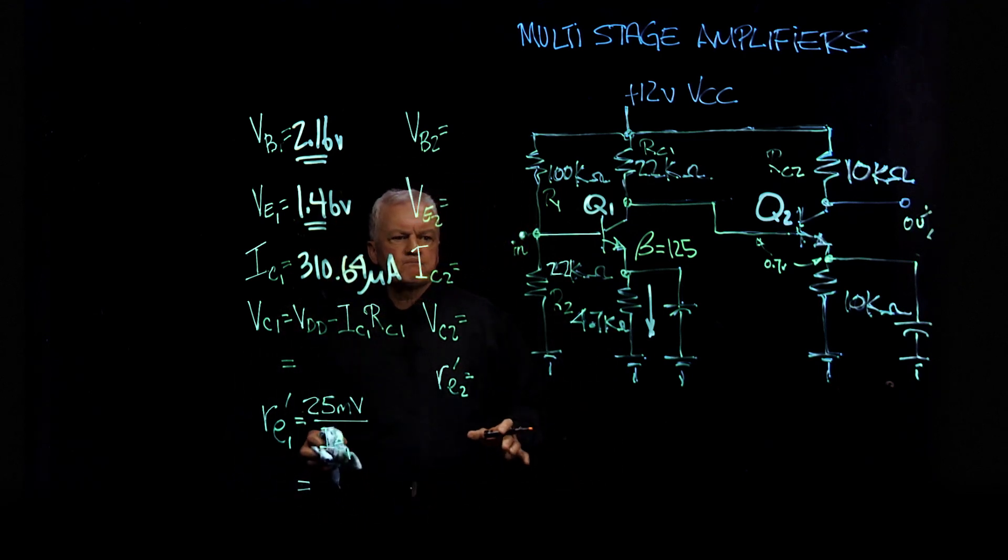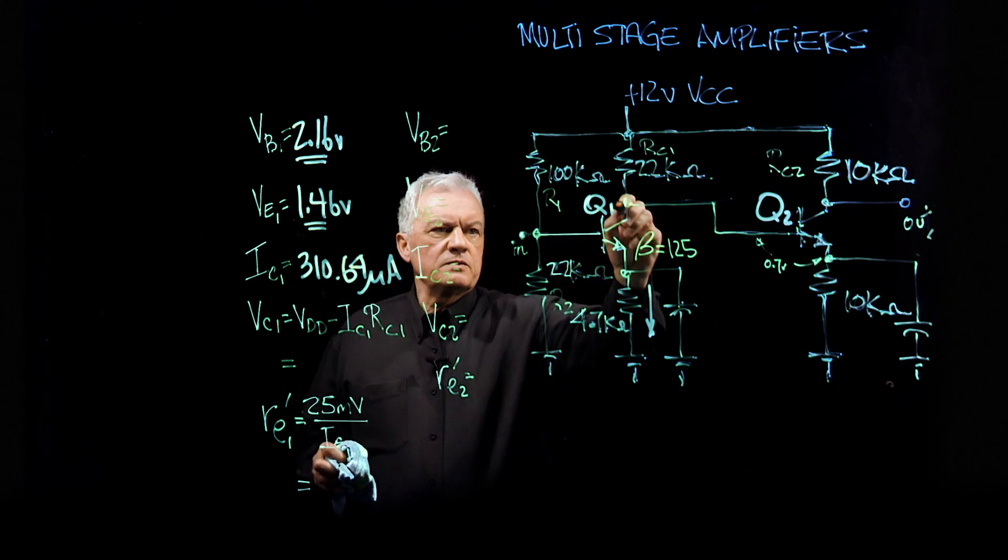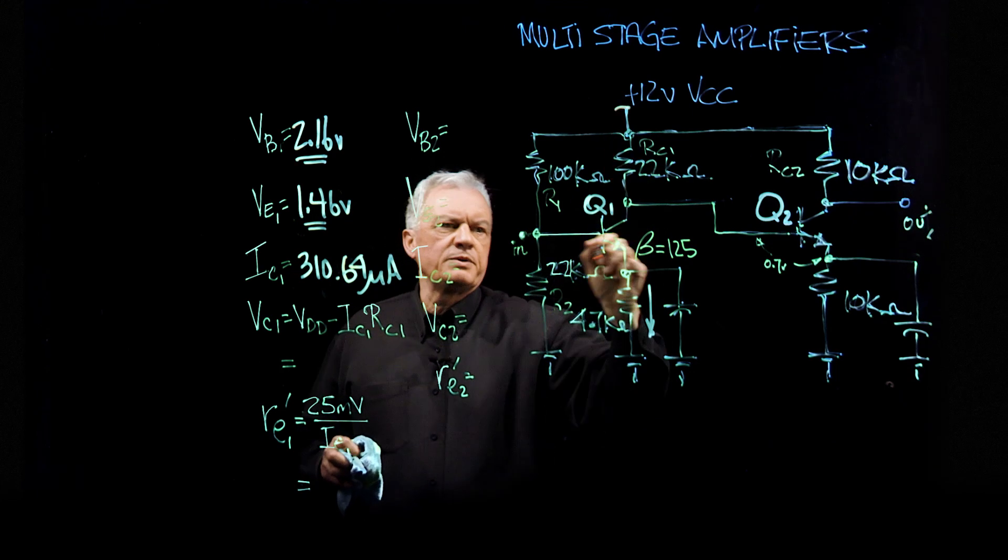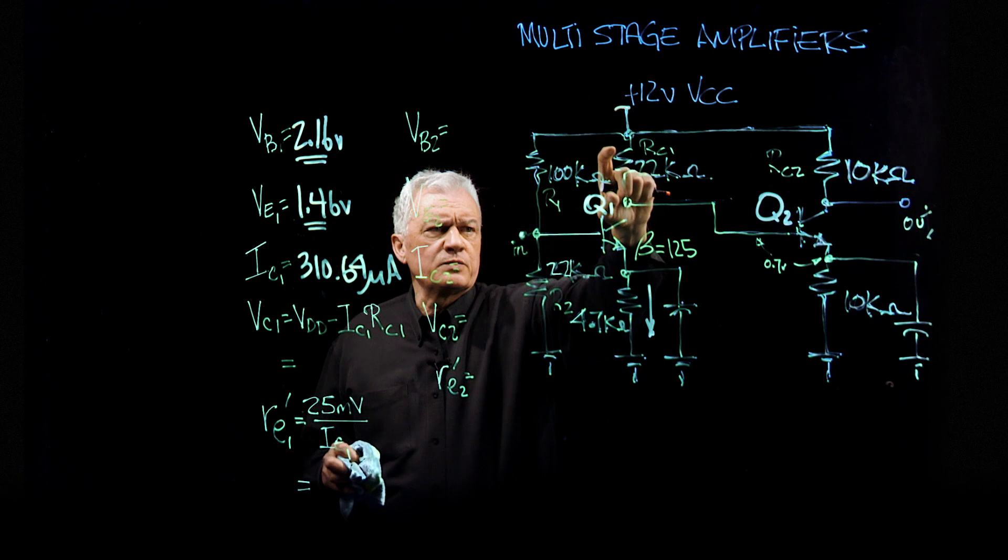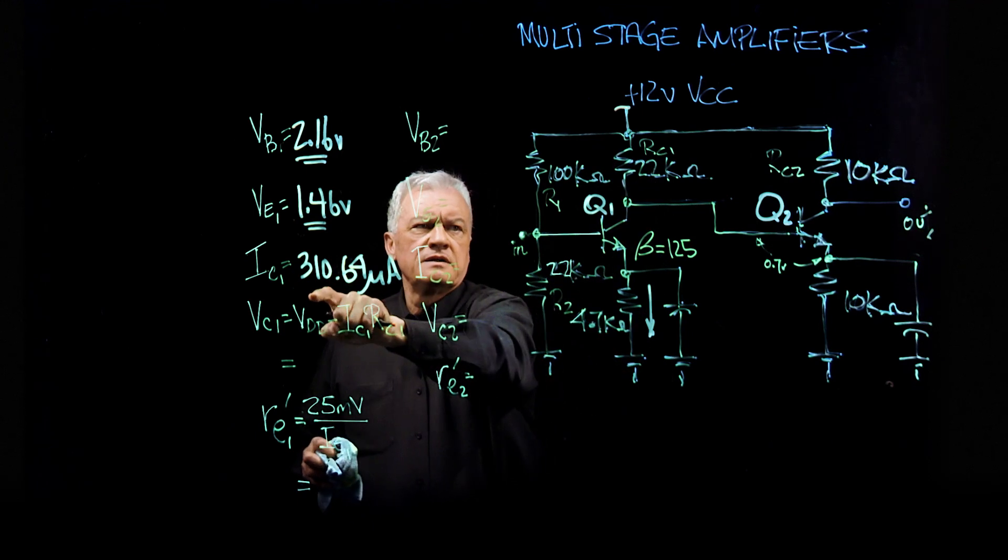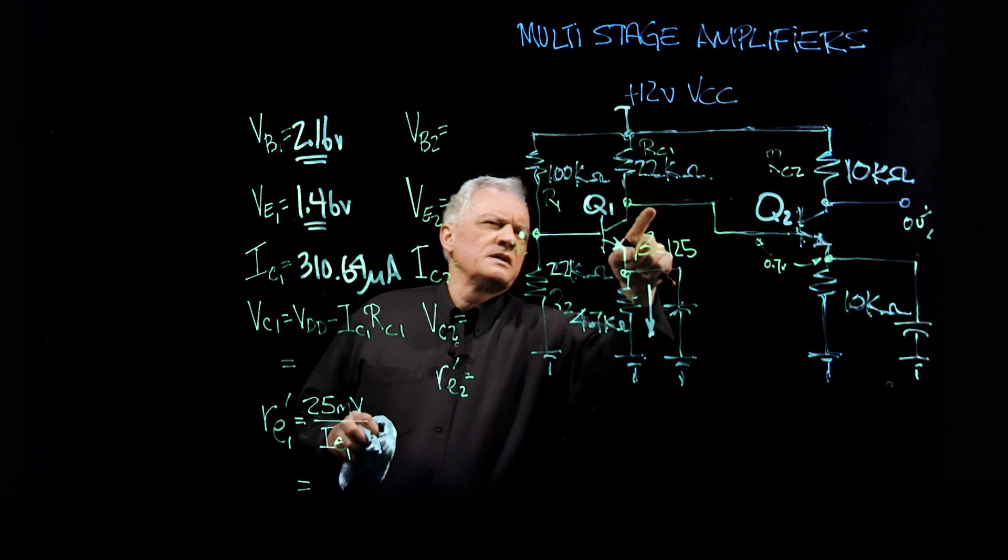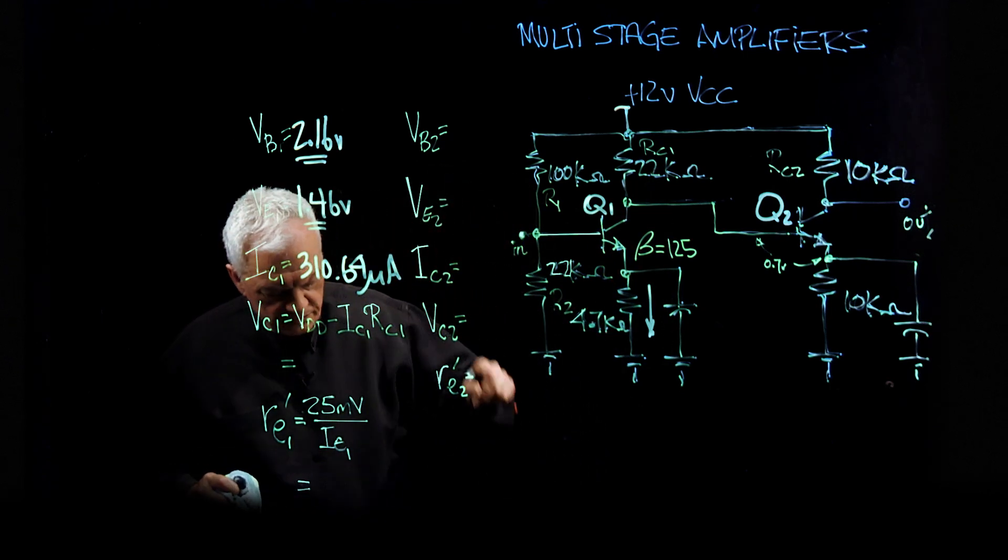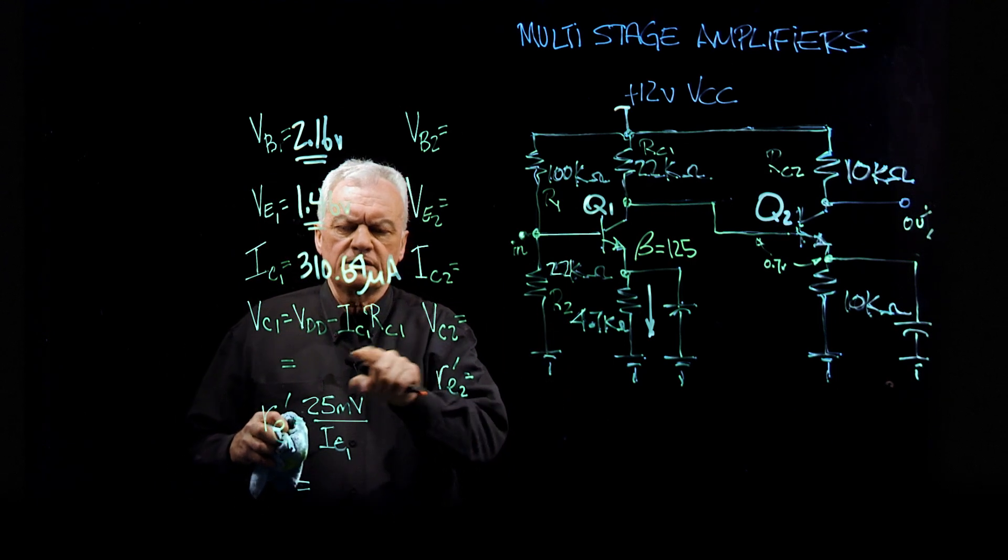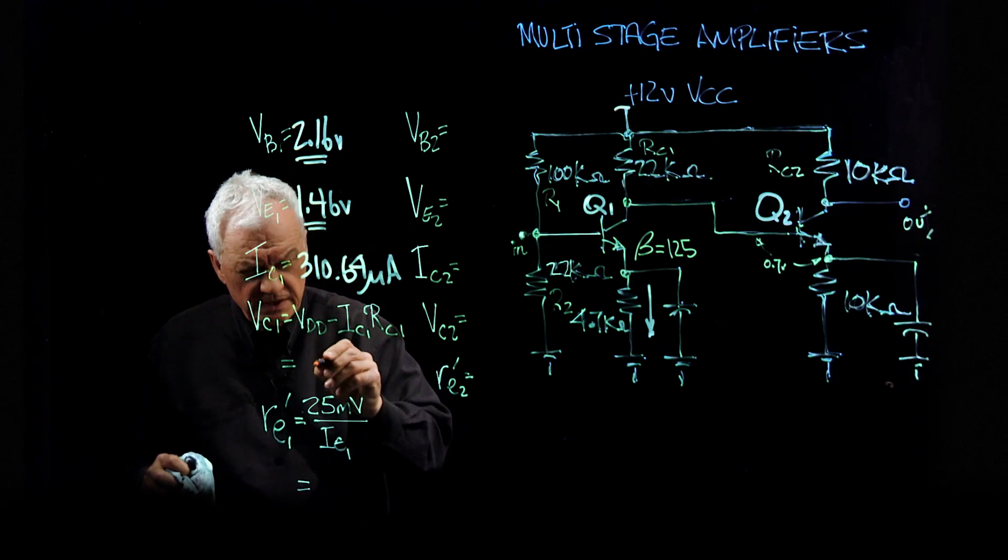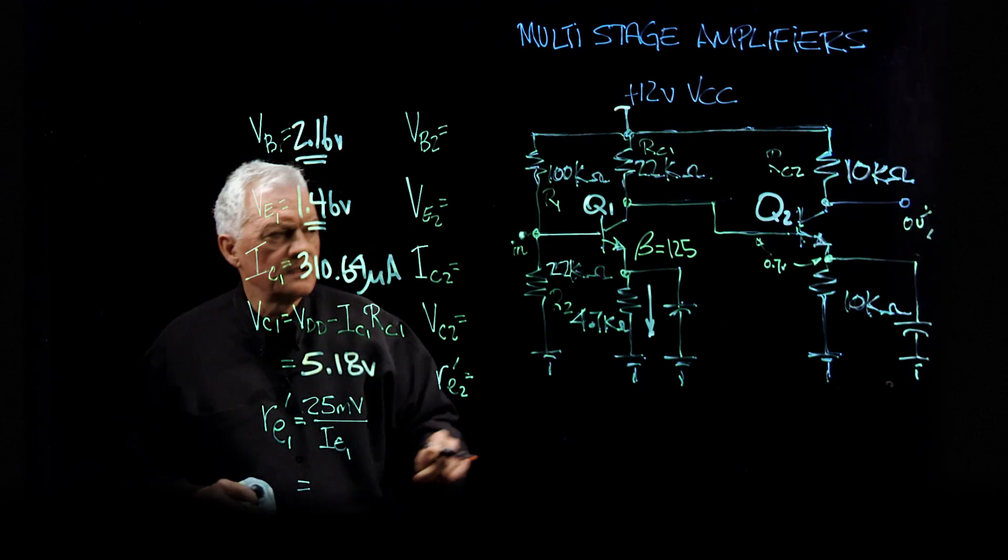Okay. So the collector current 310.64 microamps, which is the current coming through here and then goes through the transistor and then goes down through the emitter resistor. Now, that's great. The next thing to know is we know the voltage here, we know the voltage here. What is the voltage at this point? Well, we have 12 volts at the top here and we're going to drop through this resistor with that IC current. So 310.64 microamps times 22K ohm resistor will result in a current voltage here. Subtract it from 12 and what you should have is 5.18 volts on the collector.